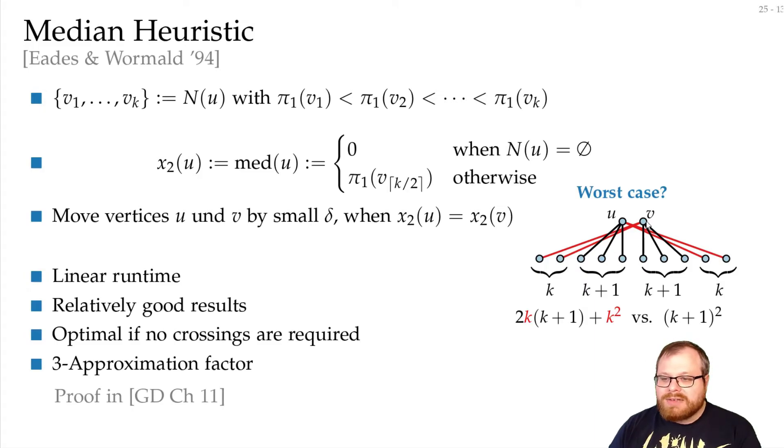On the other hand, if we switch it, then only the black edges cross each other, and we only have k+1 squared. This is approximately 3k squared plus something, this is k squared plus something, so this is about 3 times as much.